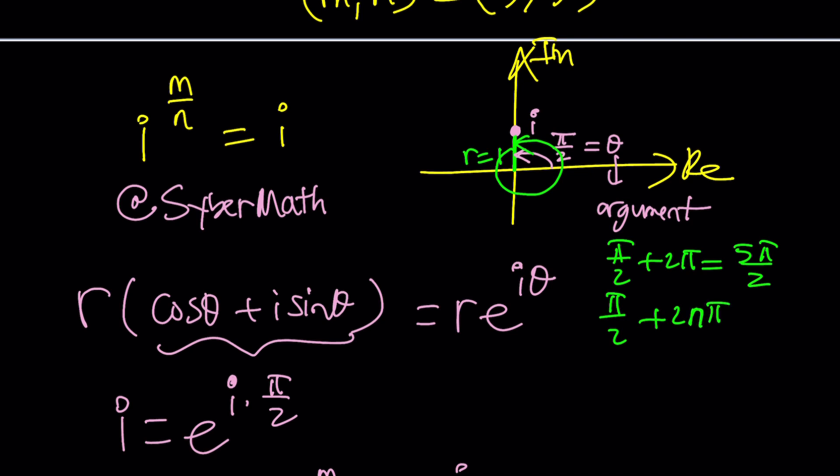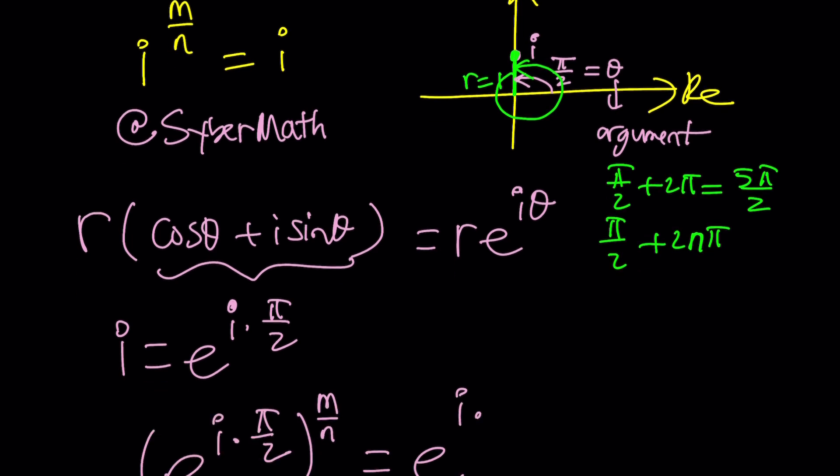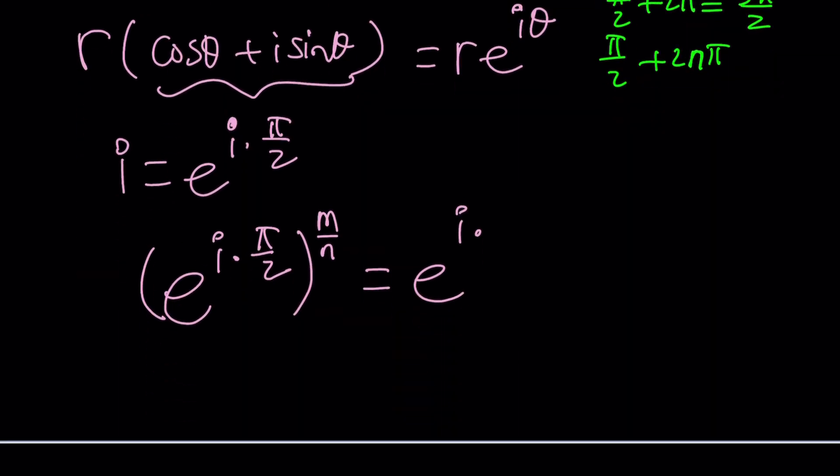This always works because it's going to bring you to the exact same point. Complex numbers are represented by a point. There is a period, these are periodic functions, so maybe we should use the period. Instead of writing pi over 2, maybe I should include multiples. I don't want to use n, so why don't we change this to k and write 2k pi.